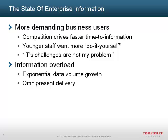Part of this is because we're producing new information — new sensors, machine-generated information, click streams from web users, call logs from cell phone use. But we're also exacerbating the problem because we keep copying that same information over and over again, whether through replication or through physical consolidation and summarization. Each new copy adds to this exponential growth.